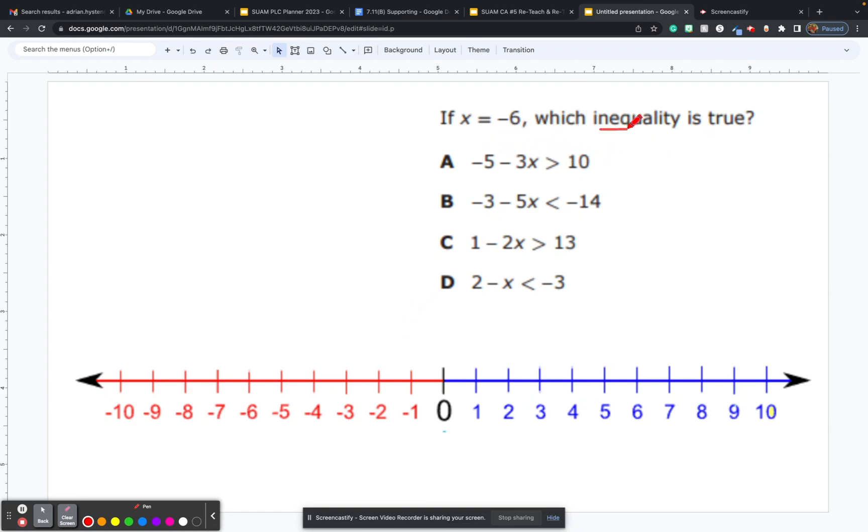Quick reminder: inequalities indicate that something is not equal. You'll notice in A, B, C, and D, we don't have equal signs. We have greater than symbols and less than symbols.